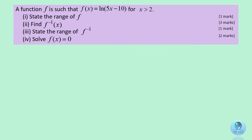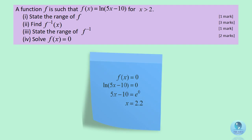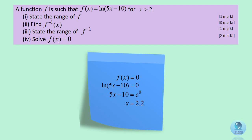For part 4, f(x) equals 0 means the natural log of (5x minus 10) equals 0. So 5x minus 10 equals e to the power of 0, which is 1. Finally, we get x equals 2.2.